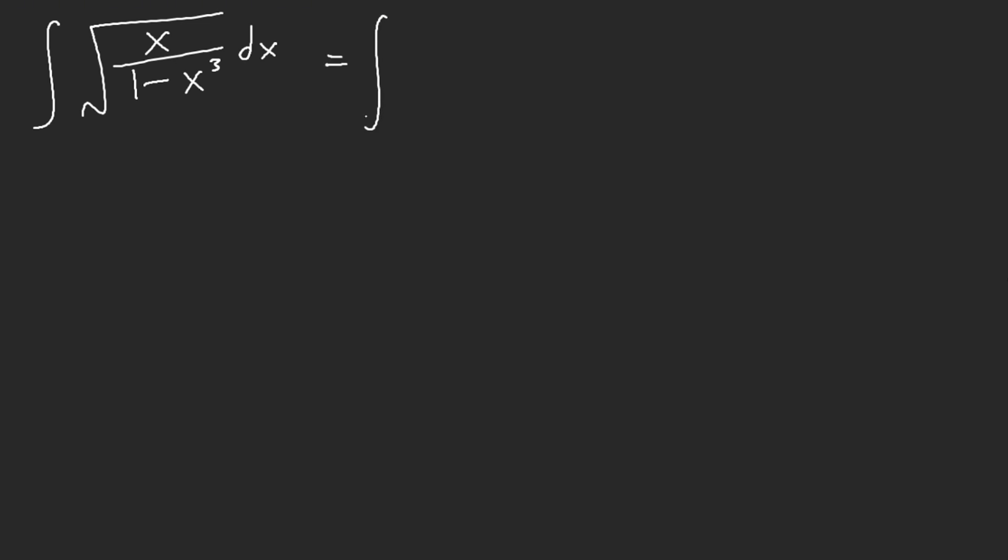To spoil you the solution, square root of x over square root of 1 minus x cubed. Now there's something about this x cubed. This x cubed is no ordinary x cubed. It is x to the power of 3 halves squared. Is there a reason why I formed it this way? Well, take a look.